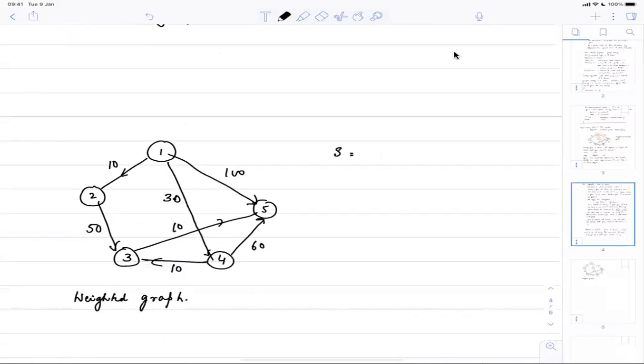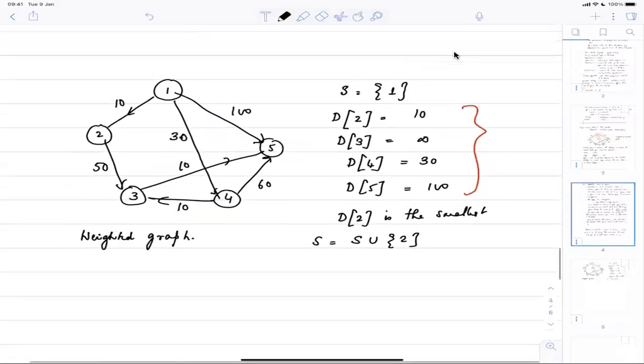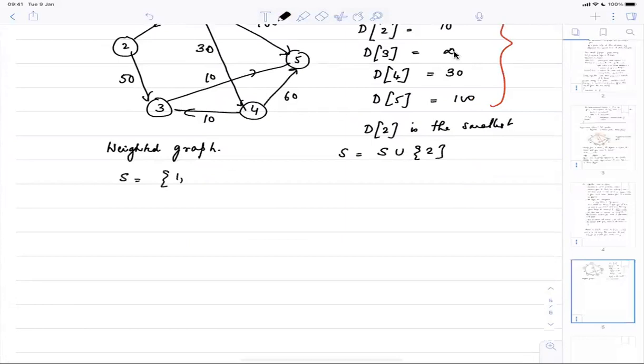We start off with S equal to vertex 1. Then we maintain an array D which gives you the shortest direct paths. D of 2 is set to 10, D of 3 there is no path so we set it to infinity, D of 4 is 30, and D of 5 is 100. Among these distances, 2 is the smallest, D of 2 is the smallest. So we say S is equal to S union 2 to include vertex 2.